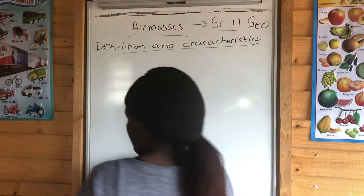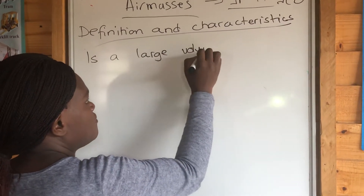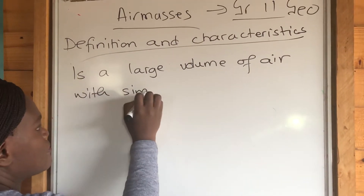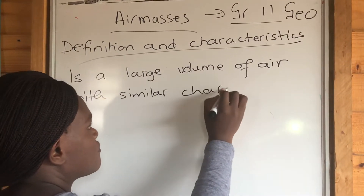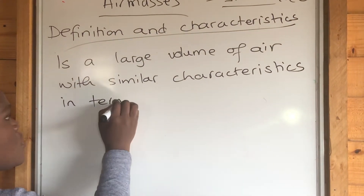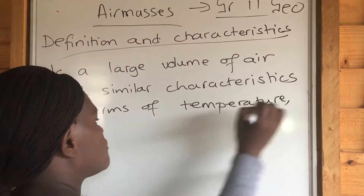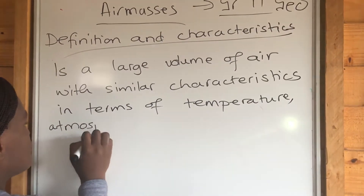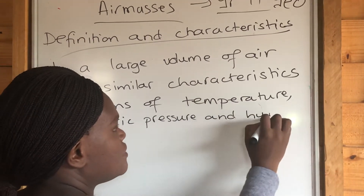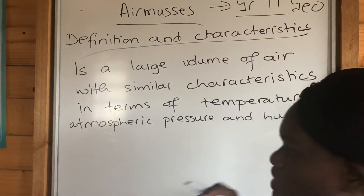Now, what are AMSs? An AMS is a large volume of air with similar characteristics — similar characteristics in terms of temperature, atmospheric pressure, and humidity. These are the three main characteristics of AMSs.